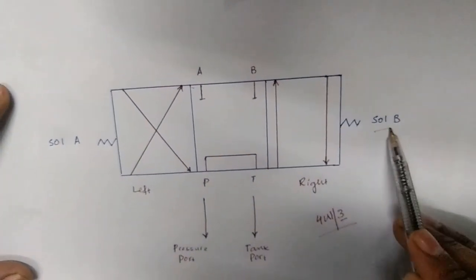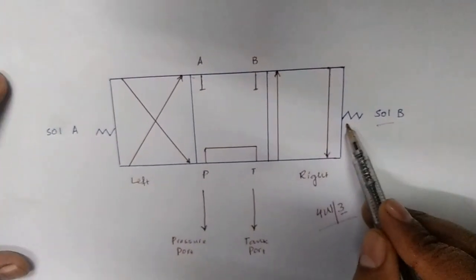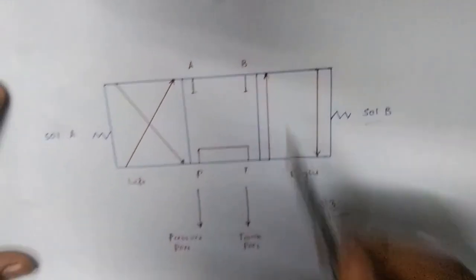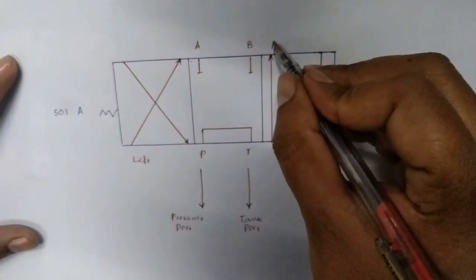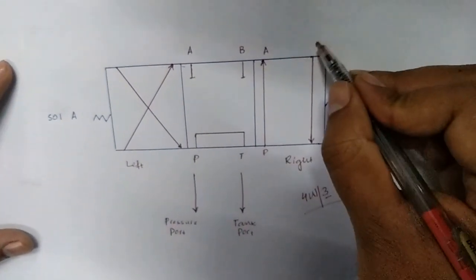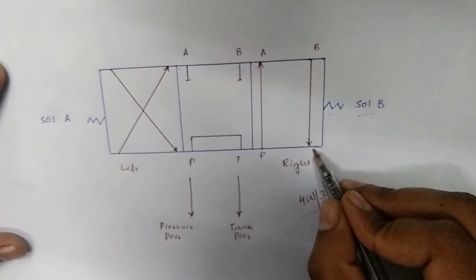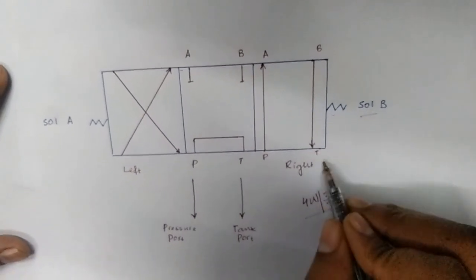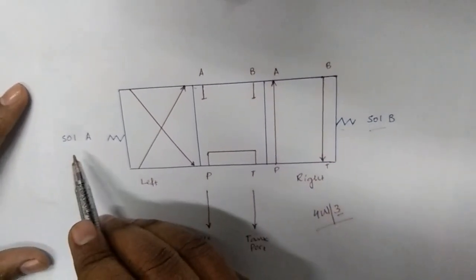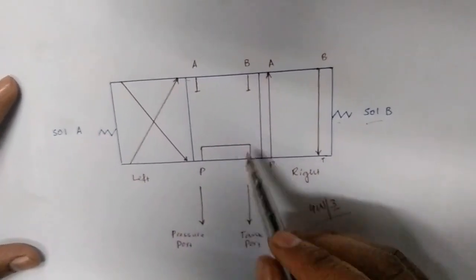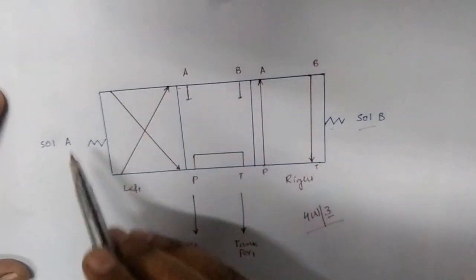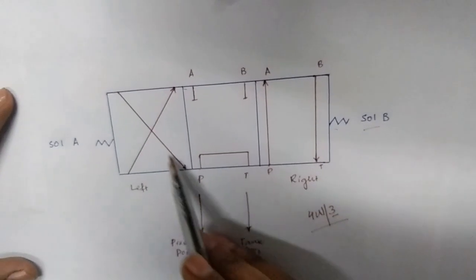When solenoid valve B is active, P links to port A — so pressure from the pump goes to port A, and flow from port B returns to the tank port T. When solenoid A is active, the left position is active: P connects to B, and A connects to the T port.